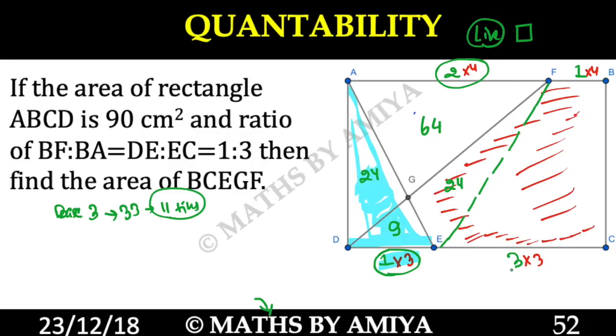Ab mujhe dekhna hai, yahaan peh is trapezium ki agar main baat karun, which one is a blue one. Blue one mein aapka sum of parallel sides 9 plus 4, 13 hai. And critical value, you can say factor is 11. Yeh jo hoga, yeh hoga 13 into 11 is nothing but 143.